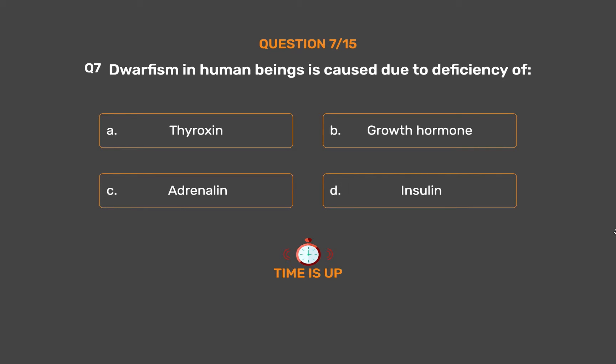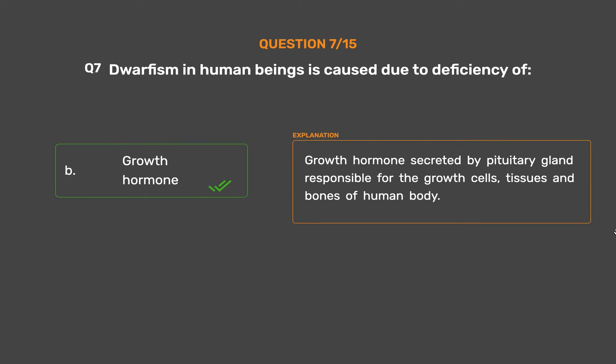The correct answer is Option B, Growth hormone. Growth hormone, secreted by the pituitary gland, is responsible for the growth of cells, tissues, and bones of the human body.